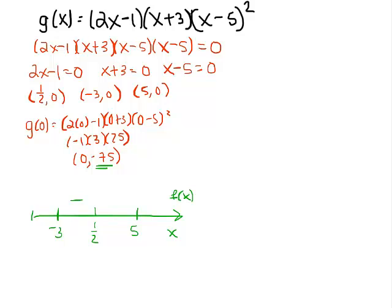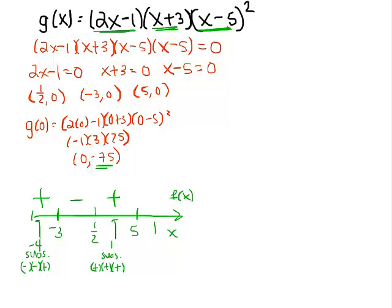Let's start on the far left and substitute in negative 4. Plugging negative 4 into the first factor gives a negative, the second factor gives a negative, and the third factor gives a negative — but then I square it, so that's a positive. Anything squared is always positive. So that gives me a plus sign. Now let's plug in 1 for the interval between 1 half and 5. The first factor is positive, the second is positive, and the third squared is also positive — plus sign. For the interval past 5, substituting 6 gives positive times positive times positive — also positive.